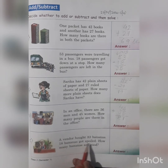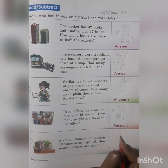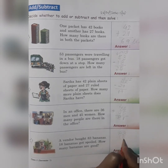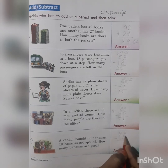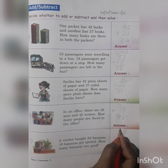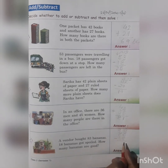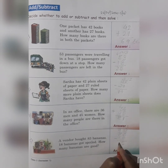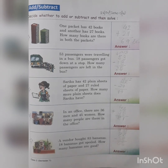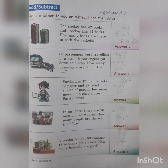Problem 5: There are 83 bananas. 18 bananas got spoiled. How many bananas are good? We subtract 18 from 83: taking a carry, 8, 9, 10, 11, 12, 13; then 5 — giving 65 bananas in good condition. So we have completed the subtraction chapter. Thank you.